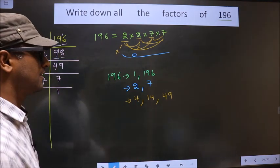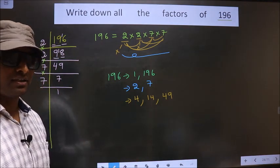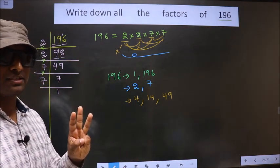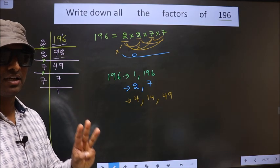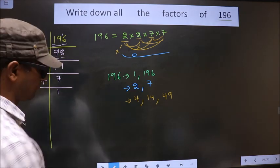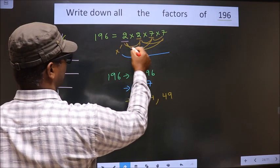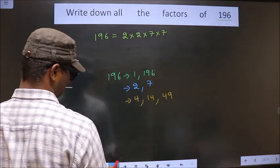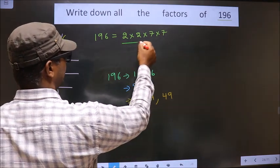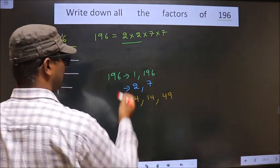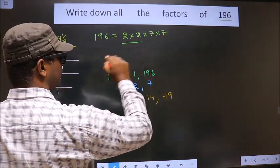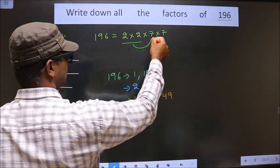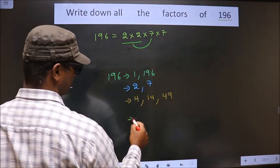No more combinations possible. Now we take combination of 3 numbers. How do we take? So 4 into 7? 4 into 7 is 28.